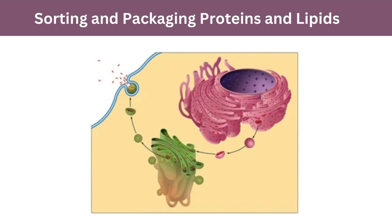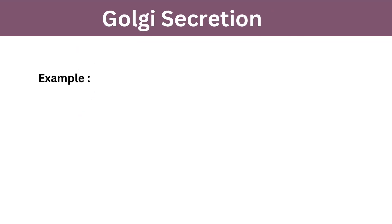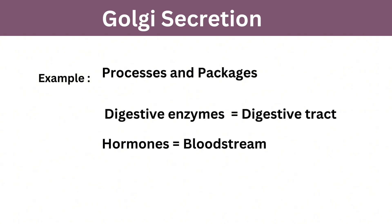Proteins and lipids are packaged into vesicles which bud off from the trans phase of the Golgi apparatus as secretory vesicles, which are then secreted outside the cell. As an example, the Golgi apparatus processes and packages digestive enzymes and hormones, facilitating their secretion into the digestive tract and bloodstream, contributing to digestion and blood glucose regulation.